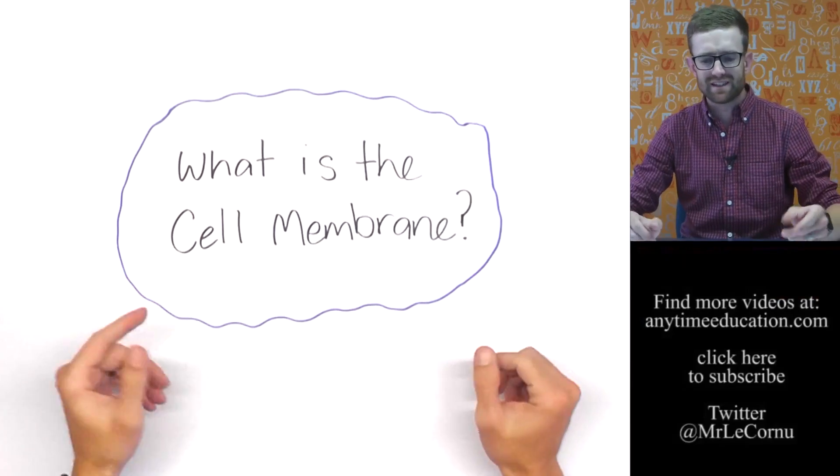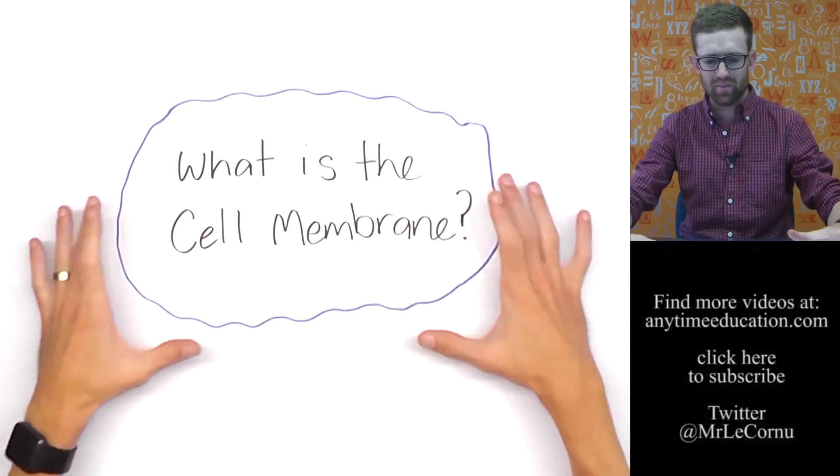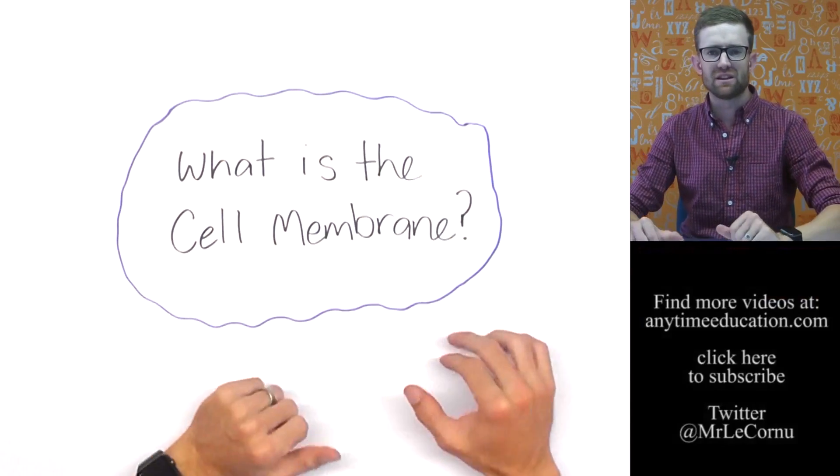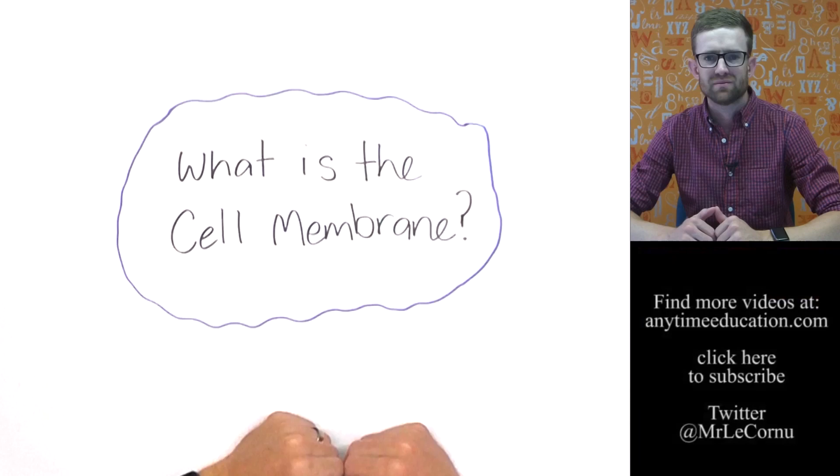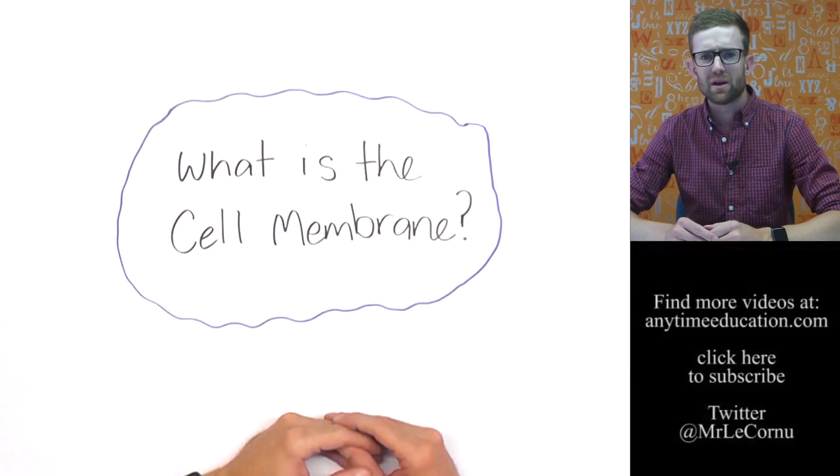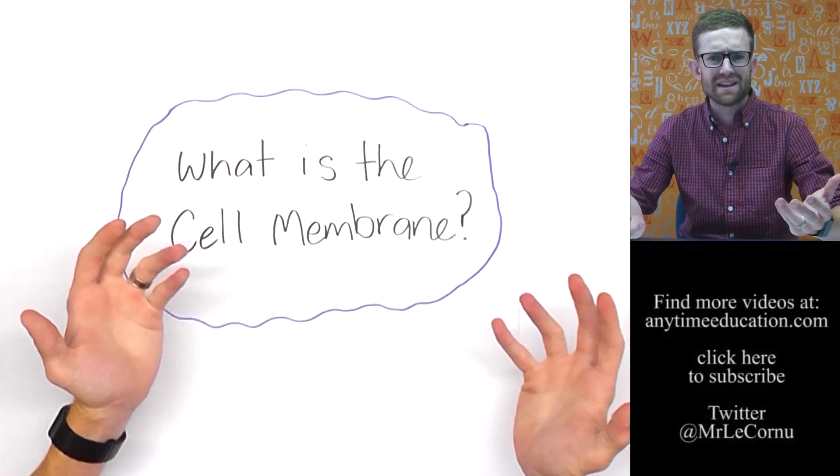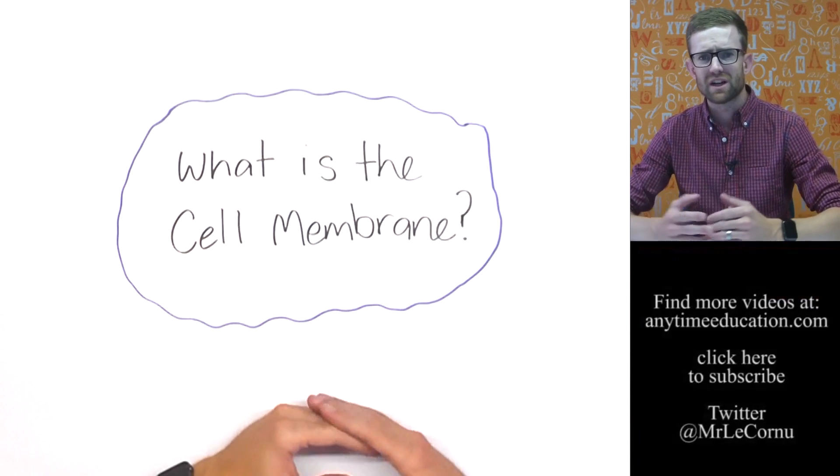Okay, so what is the cell membrane? Well, imagine this here is a cell and the membrane is the thing that goes around the outside of it. But I think we want to find out a bit more. What's it made of? What's its job? Why do we need a cell membrane? Well, let's check it out.